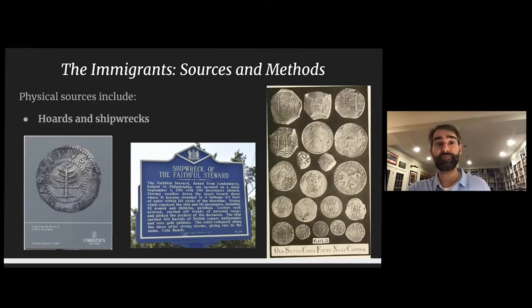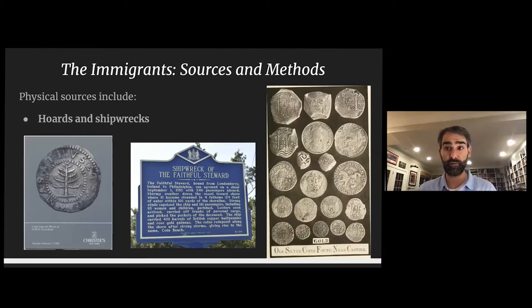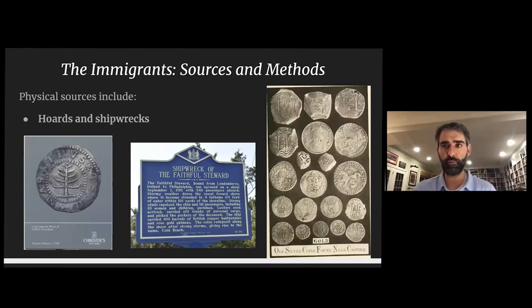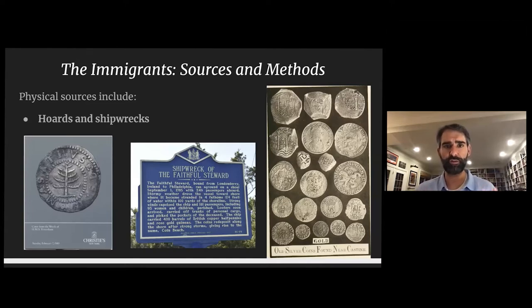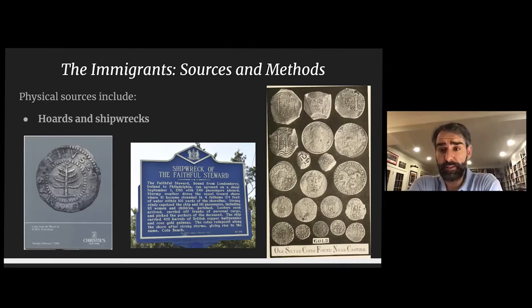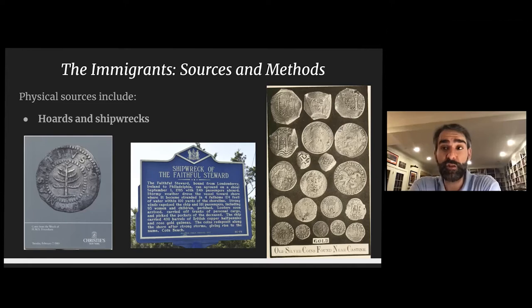Let's start with hoards and shipwrecks. Collecting coins from well-known early American shipwrecks is a great way to learn what the colonists saw and to actually own a coin we know was there. If you buy a coin from the Feversham — the lower left shows the 1989 Christie sale catalog — you know that coin was in New York City in 1711. When that ship took on those coins at the sub-treasury in New York, they pulled them right out of pocket change.